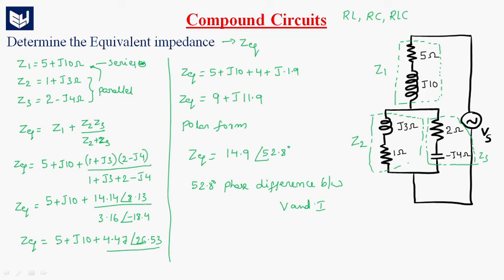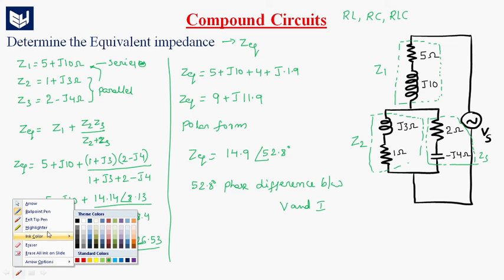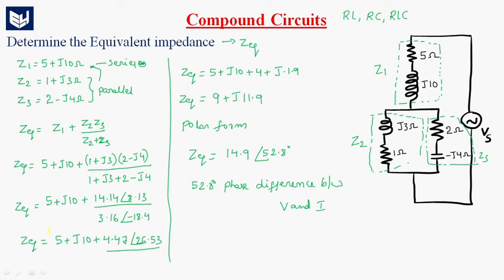So this is about compound circuits. In compound circuits, the circuit has different series and parallel combinations. We were asked to find the Z equivalent, which is equal to 9 plus J11.9. Thank you.